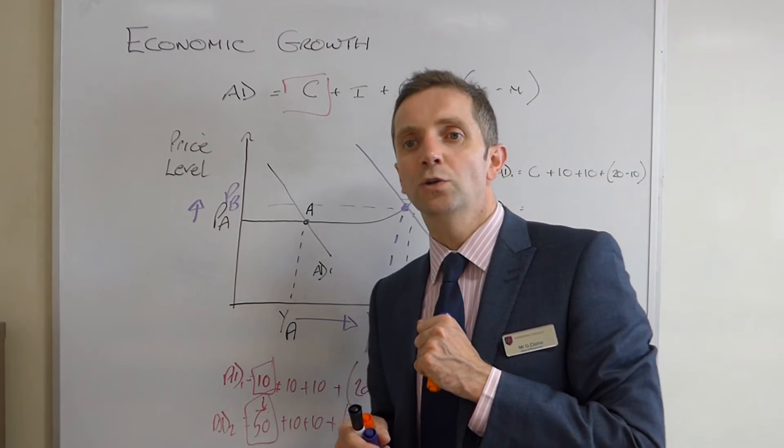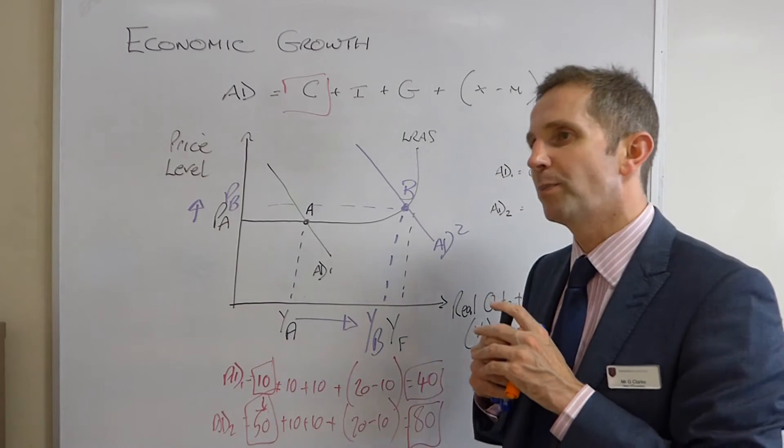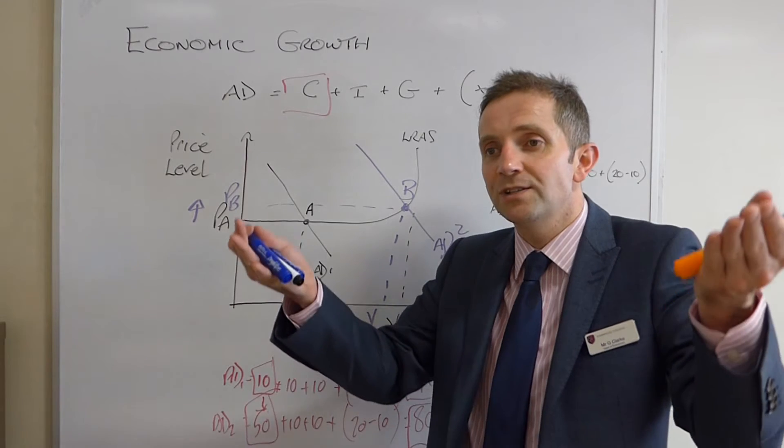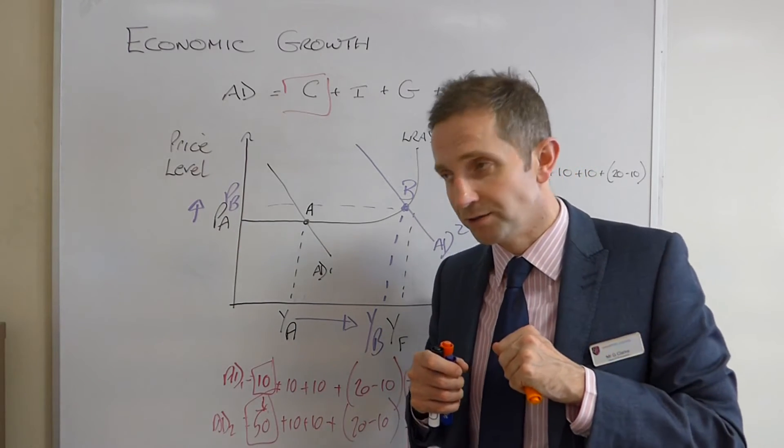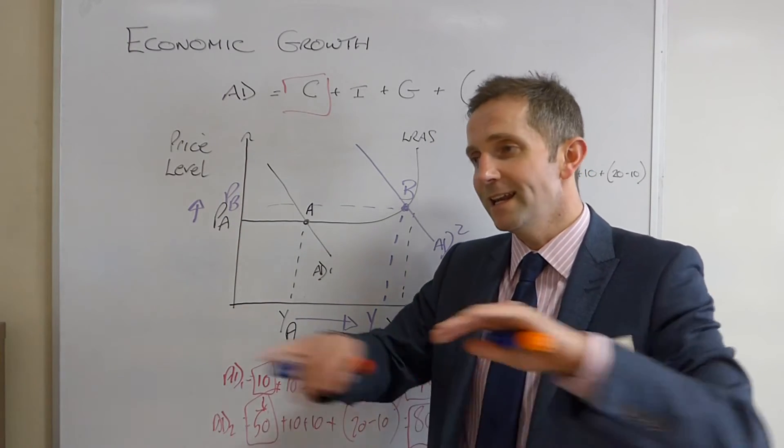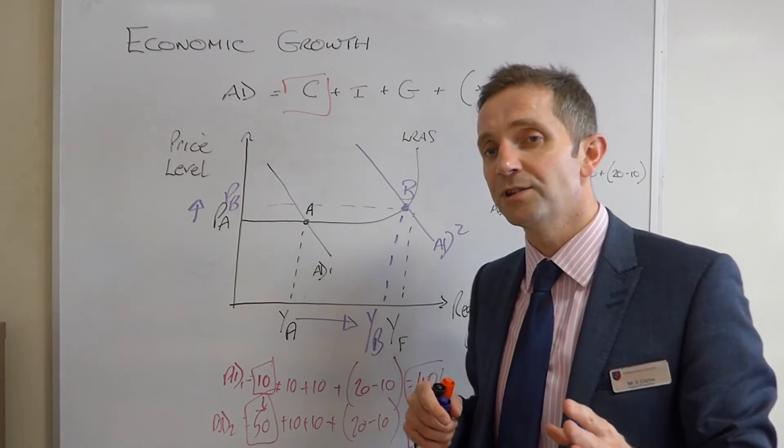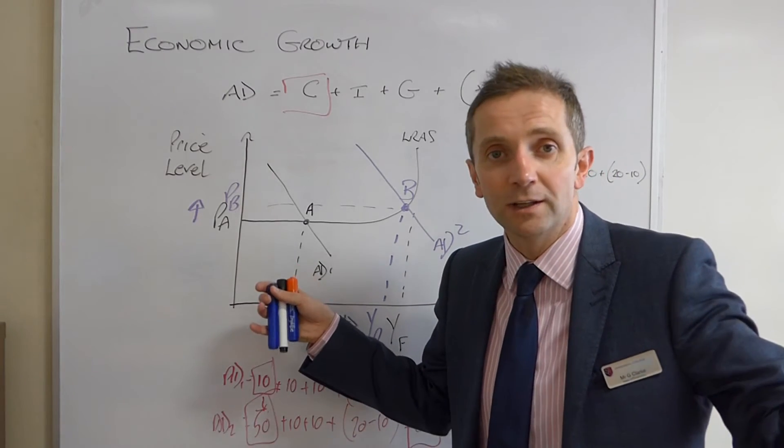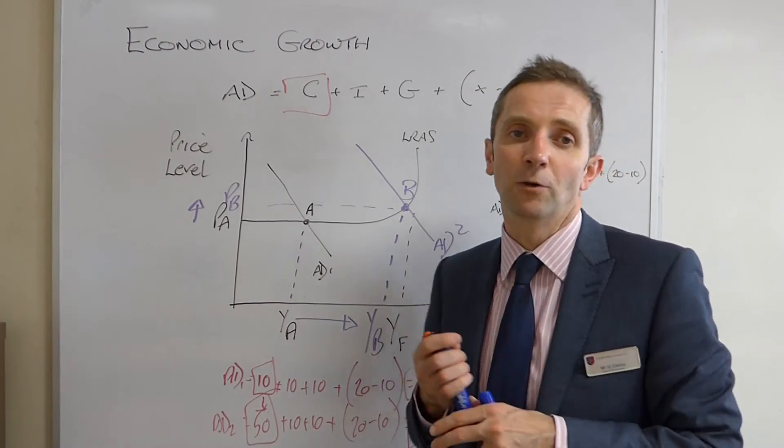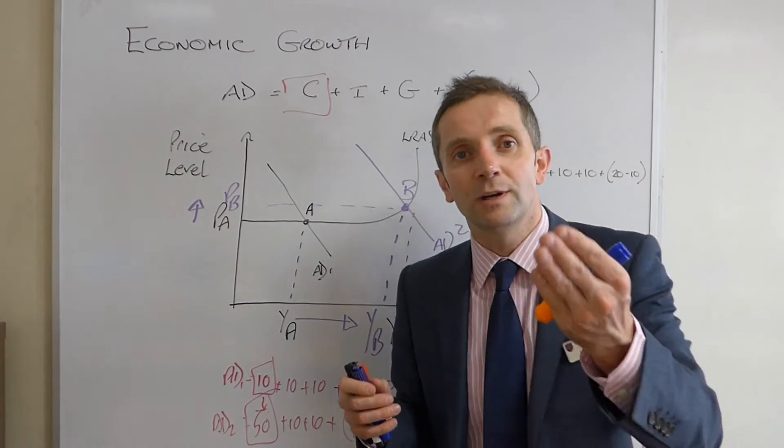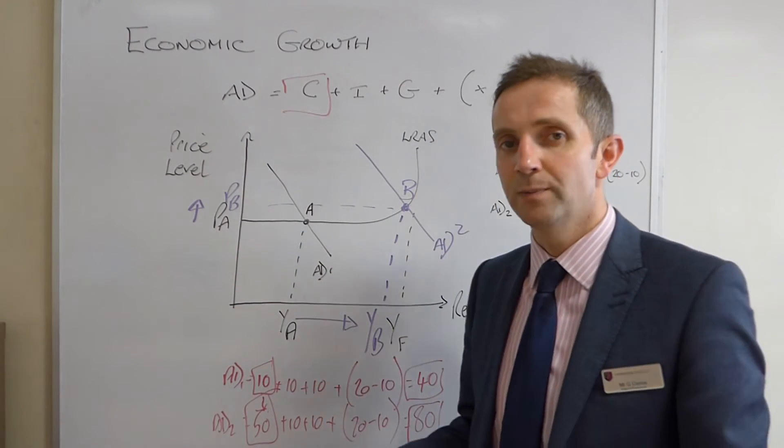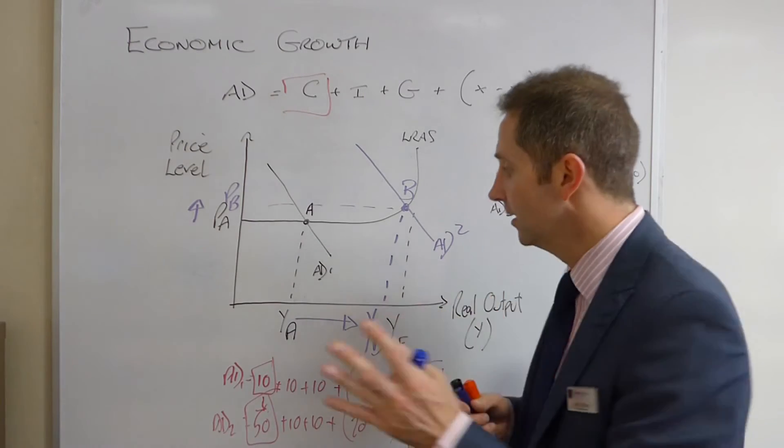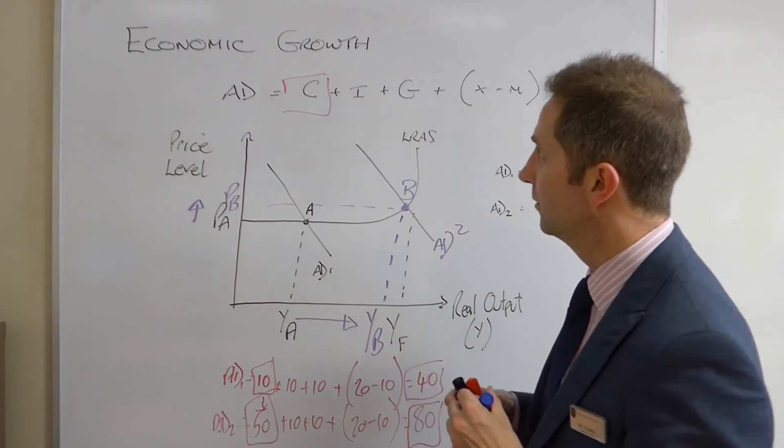Or, you could fiddle around with the tax bands and the tax brackets. And you could, for example, as the government have recently done, you could increase the personal tax allowance. So, the amount of money that you can earn before you start paying any tax, as you well know, has gone up to £11,600. Well, that will give some people, lots of people, more money in their pocket, and so consumption may go up. Or, the government may decide, let's increase the minimum wage. More people have more money, so consumption goes up. So, anything at all like that would increase C and help us to shift AD to the right.